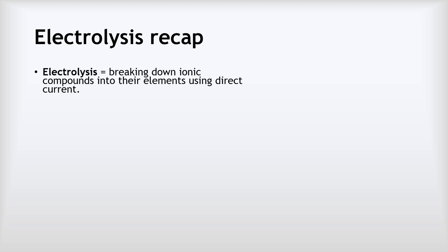So let's recap the basics of electrolysis. Electrolysis is breaking down ionic compounds into their elements using direct electrical current. Direct current is electrical current that always flows in one continuous direction around a circuit, unlike alternating current which flows around the circuit but changes direction many times each second.